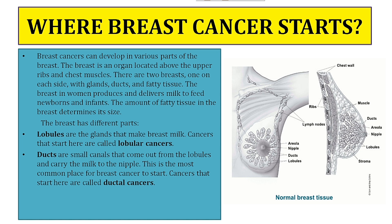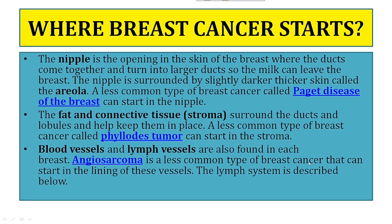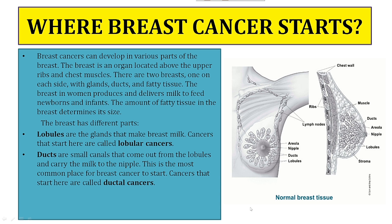Now, where does breast cancer start? Breast cancer can develop in various parts of the breast. The breast is an organ located above the upper ribs and the chest muscles. Here is the diagram of the breast — we can see the areola, the nipple, the ducts, and the lobules. These are the four parts of the breast.